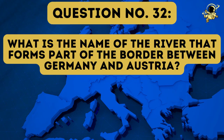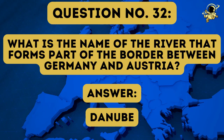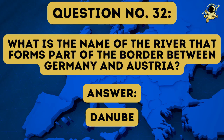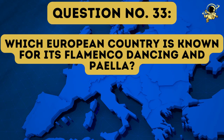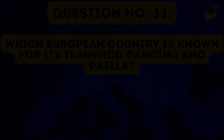Question number thirty-two: What is the name of the river that forms part of the border between Germany and Austria? And the answer to question number thirty-two is an old friend — it is the Danube. Question number thirty-three: Which European country is known for its flamenco dancing and paella? And once again the delicious answer to question number thirty-three is Spain.